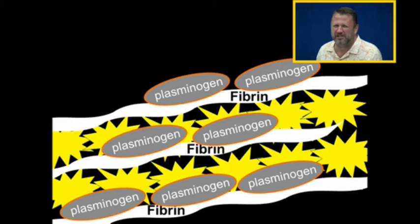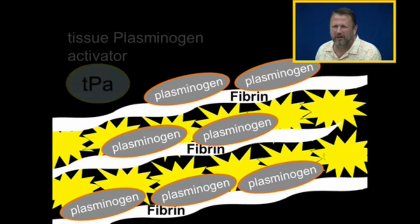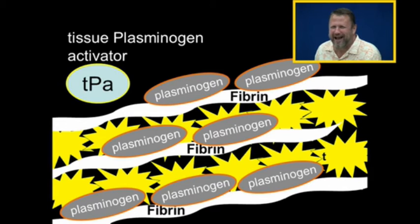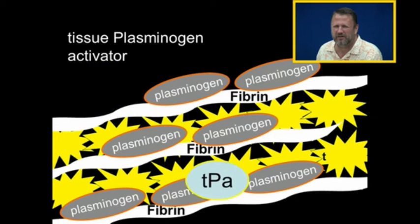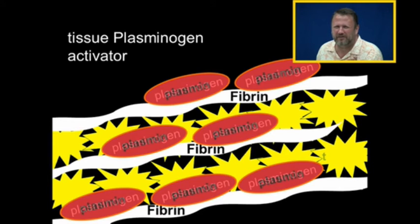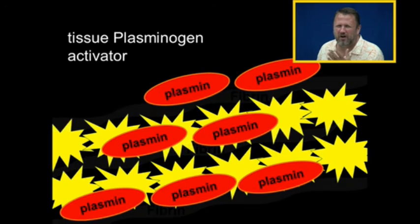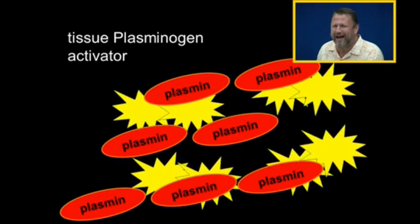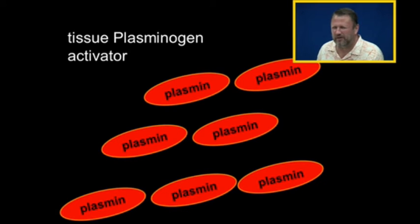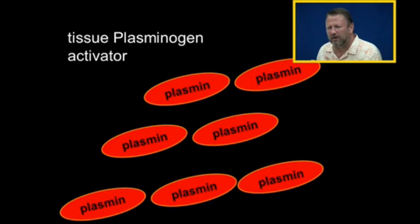Something called plasminogen sticks to the fibrin. Tissue plasminogen activator — TPA — is a naturally occurring substance in the body. When it activates the plasminogens, they become plasmin, and plasmin will dissolve the fibrin and cause the platelets to de-aggregate so the clot can be dissolved.